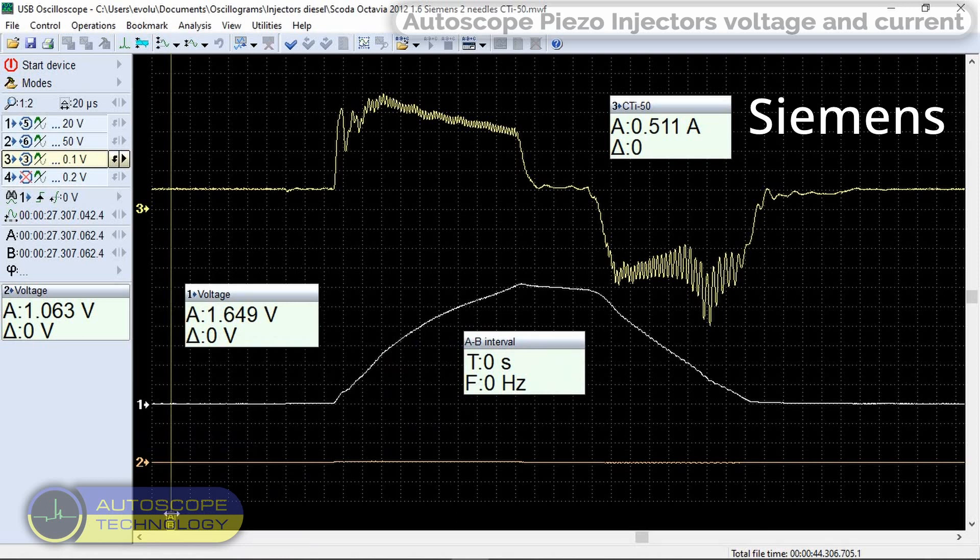Cursor A will measure the current. The maximum current is approximately 5 amps. Then the current gradually decreases to zero. This is the opening phase of the injector.